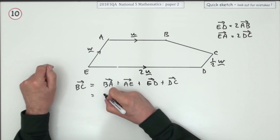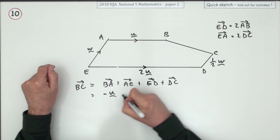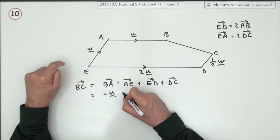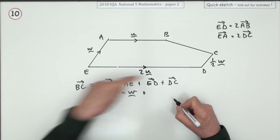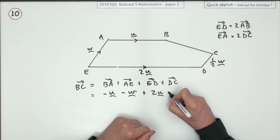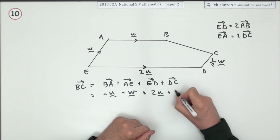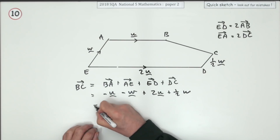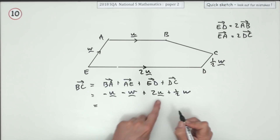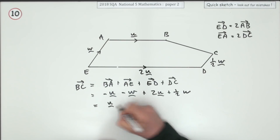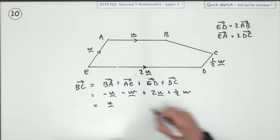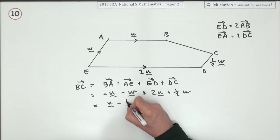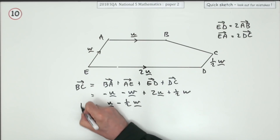Going this way: B to A is the opposite direction to u. A to E is the opposite direction to w. But now going with the flow, it's plus 2u and plus half w. Tidying up: 2u take away u is a single u. Half a w take away a whole one means it's minus a half w. So the answer is u minus half w.